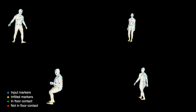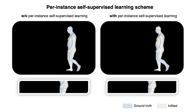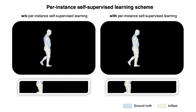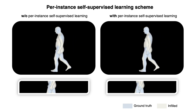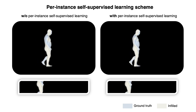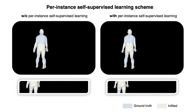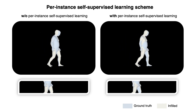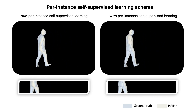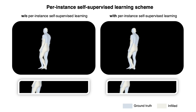Given only upper body markers, the infiller can recover realistic full-body motions as well. We also propose a per-instance self-supervised learning scheme. For each individual test sequence, we fine-tune the pre-trained infilling model weights by a self-supervised loss defined on the visible body parts. Specifically, we minimize the reconstruction loss of visible body markers of each test sequence separately to adapt the general prior to be sample-specific. Comparing the blue ground truth body and the infilled white body, the hand motion demonstrates that this strategy can improve motion infilling accuracy significantly.